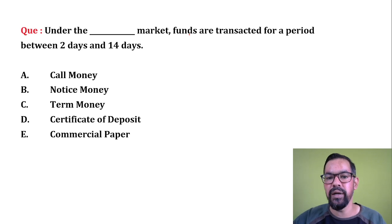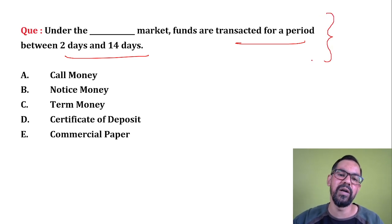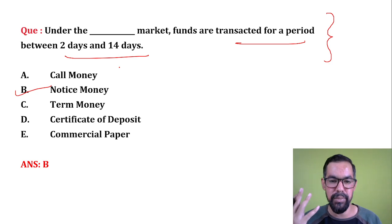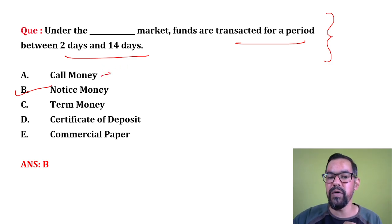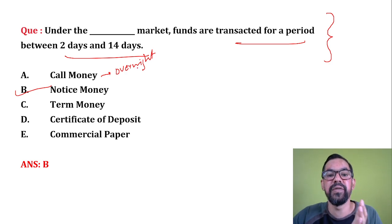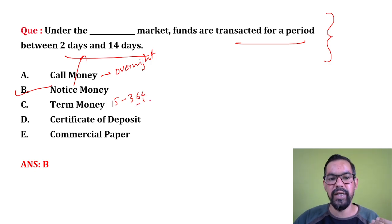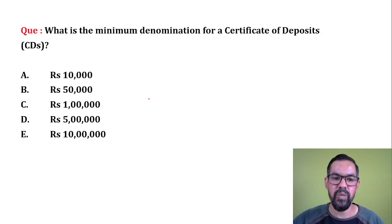Next question: under which market are funds traded for a period between 2 to 14 days? The correct answer is notice money. Call money, notice money, and term money are all interbank transactions where participants are banks. Call money is for overnight or 24-hour transactions. Notice money covers 2 to 14 days. Term money covers 15 to 364 days — less than one year. Option B — notice money — is correct.